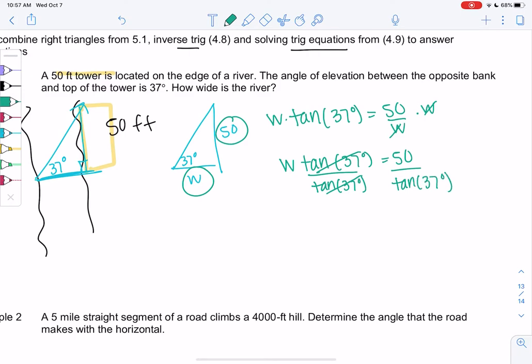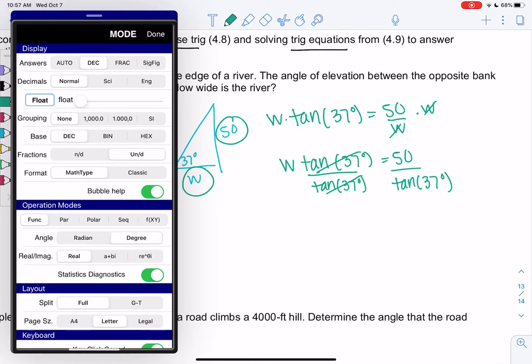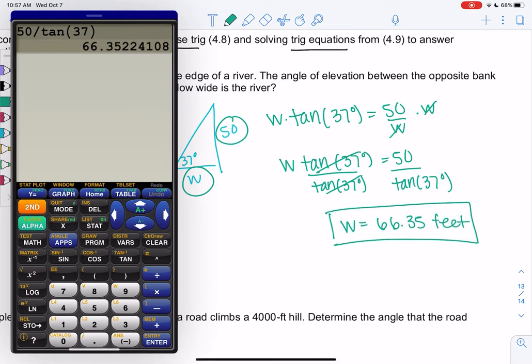So for most applications, we'll use a calculator to estimate. So make sure you're in degrees, wherever that setting is. And we will do 50 divided by tangent of 37. And so the width of the river is about 66.35, and it'll be in feet. And that's it. If you don't draw a picture though, this is almost impossible.